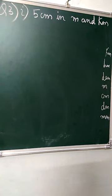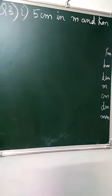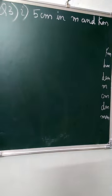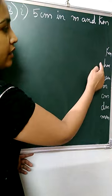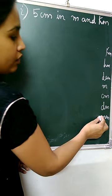Starting with question number 3. The first one says convert 5 centimeters into meters and also into kilometers. Now, do you remember the scale we have done in our lower classes? That is millimeter, decimeter, centimeter, meter, decimeter, hectometer, and kilometer.